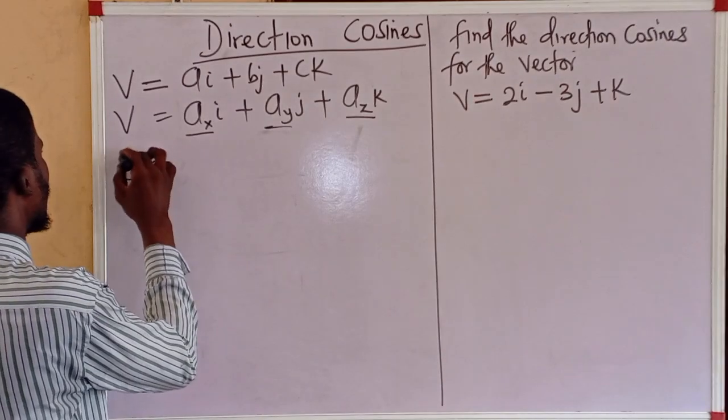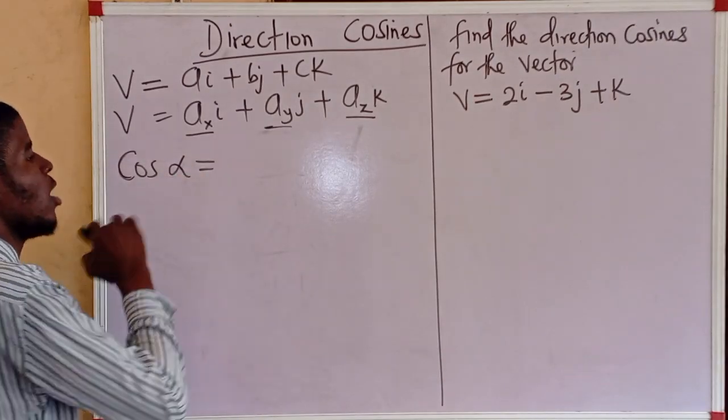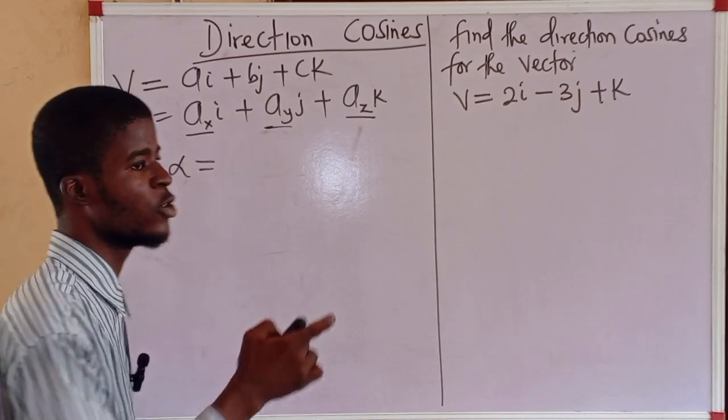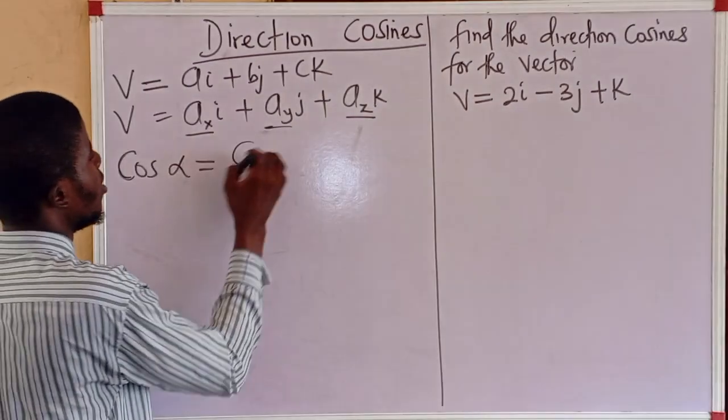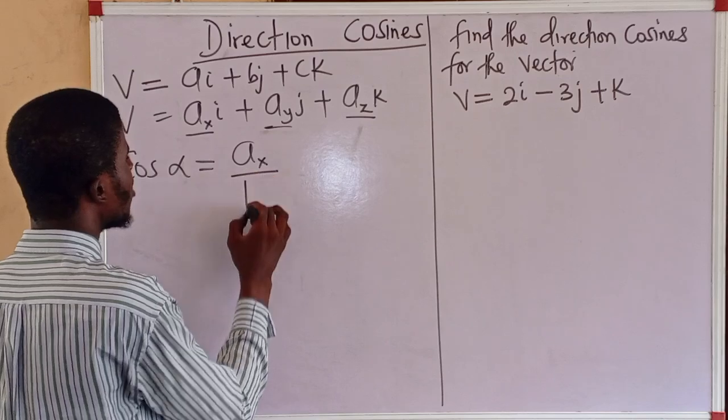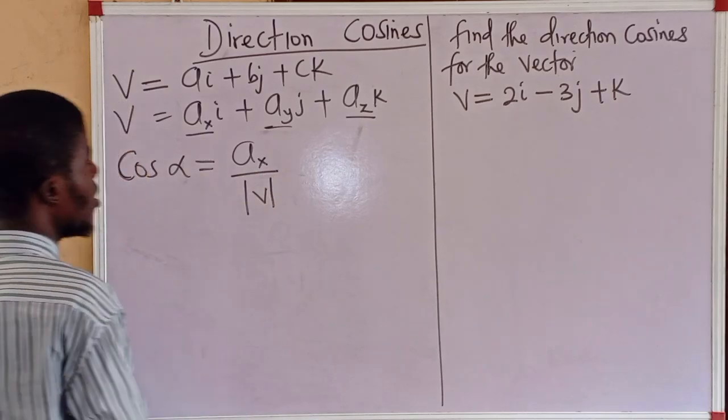cos alpha - alpha is the angle between the vector and the x axis. So, let's take the x component, that's a sub x all over the magnitude of the vector.